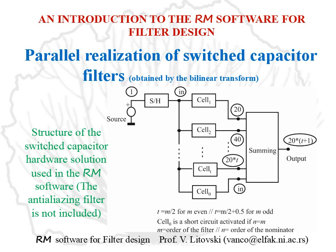Here we present the parallel realization of switched capacitor filters, which are also obtained by bilinear transform. The structure of the filter is presented: an analog source is followed by a sample and hold circuit and then a parallel set of cells driving a summing amplifier, which is used to realize the transfer function of the filter. The anti-aliasing filter is not presented in this circuit.